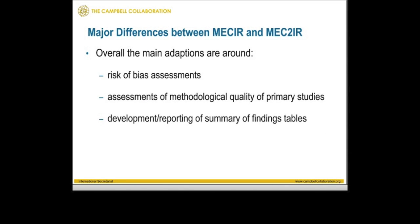Some of you may be wondering what the primary differences are between the MESSEAR and the MESS2EAR guidelines. There are many similarities between the two documents because the methodological expectations for Campbell Collaboration Reviews are highly similar to those for Cochrane Collaboration Reviews. The few minor differences really focus around three key issues. First are issues of risk of bias assessments as well as assessments of the methodological quality of primary studies included in protocols and reviews. The adaptations permit a plurality of methods for assessing risk of bias and methodological quality.